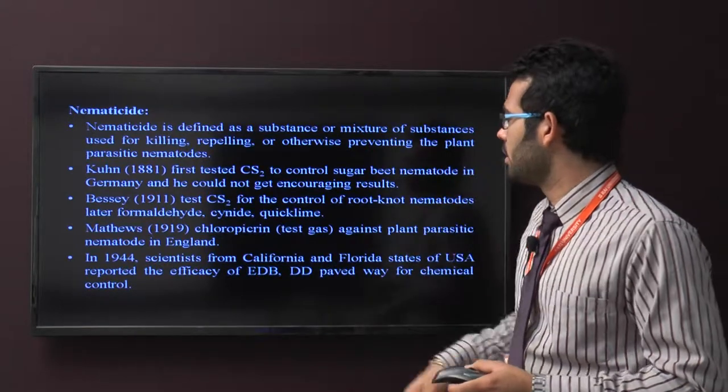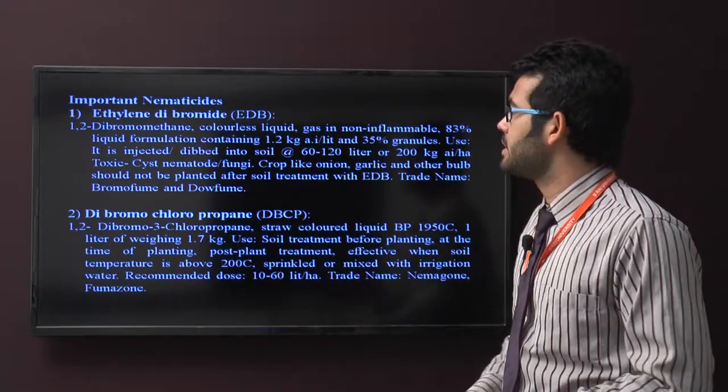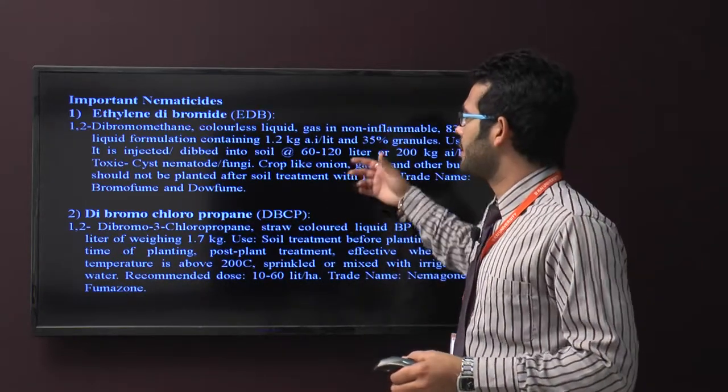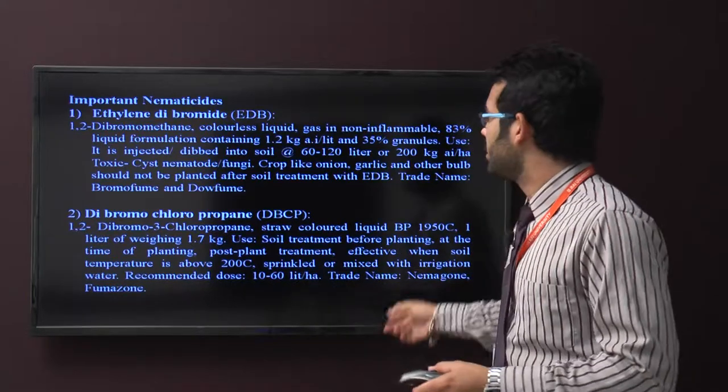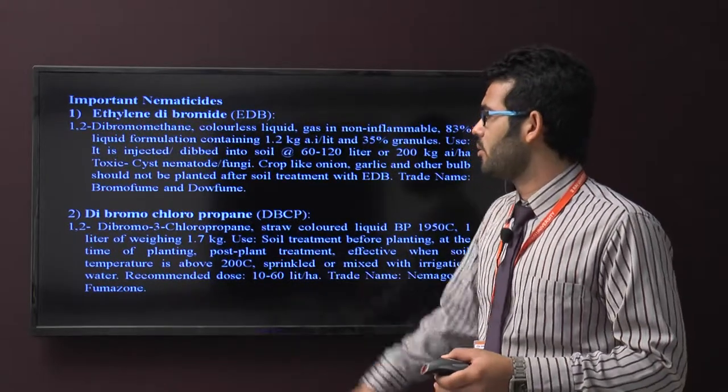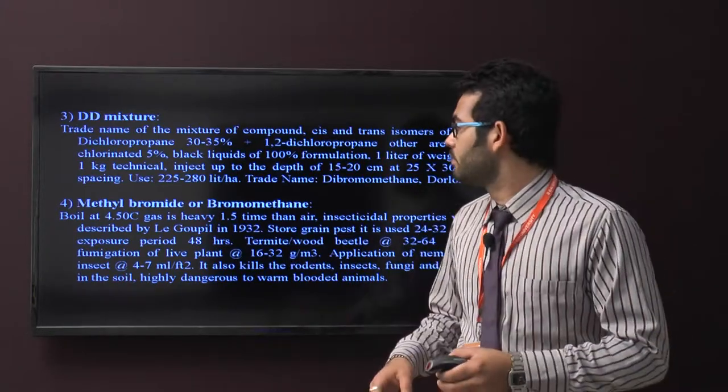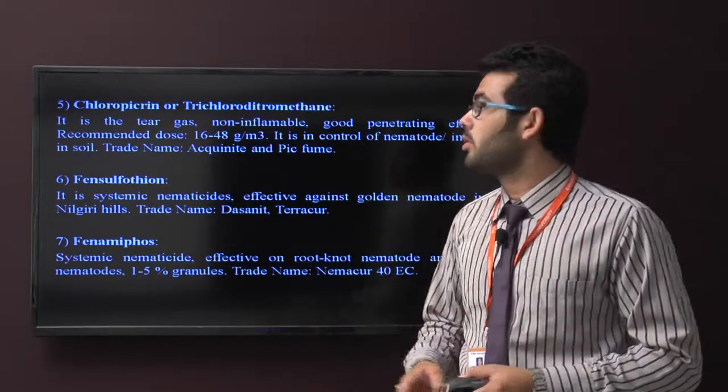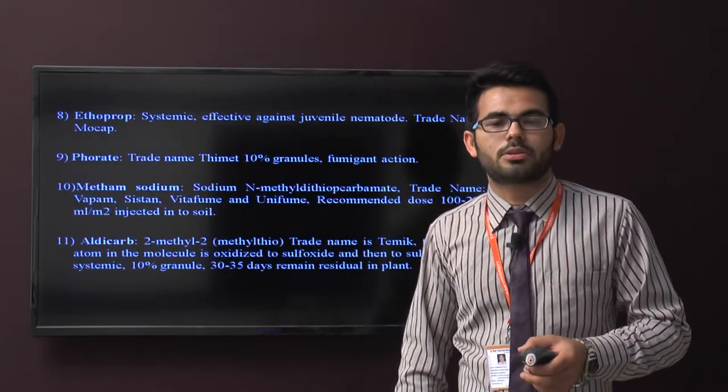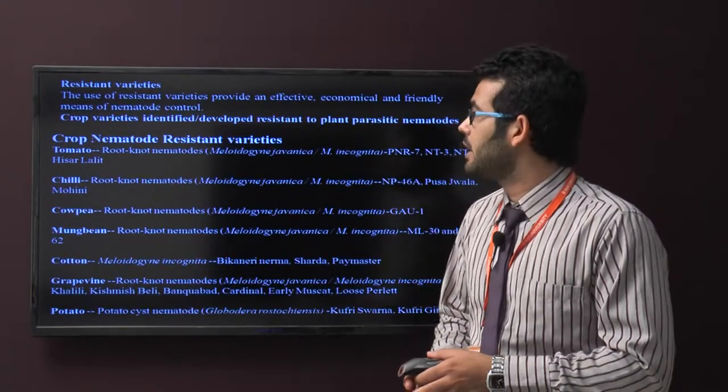There are some important nematicides like Ethylene Dibromide, Dibromochloropropane with their content and trade names. In Ethylene Dibromide, the trade name is Bromofume and Doufume. Second is Dibromochloropropane. Third is DD mixture. Then Methyl Bromide or Bromomethane. Next is Chloropicrin. Chlorfenvinphos, Phorate, Carbofuran, Methomyl, and Oxamyl.